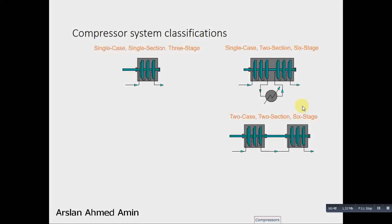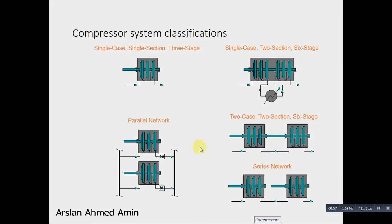This is a two case, two section and six stage compressor. And this is a series network, we have two separate cases. And this is a parallel network of two centrifugal compressors. Here we have installed the NRV, non-return valve or the check valve.